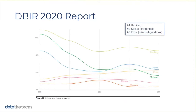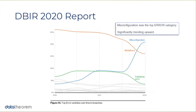Hacking continues to be the number one way a data breach occurs, usually from an external attacker. Social engineering is also significant — an attacker often wants to compromise the weakest link, and humans tend to be that weakest link. We're emotional; we can be baited with fear, with greed, using lots of different techniques to get us to compromise our identity or credentials. But what I find most interesting in this report is that in the category of errors, misconfiguration has now risen almost to the level of social attacks for why data breaches occur.